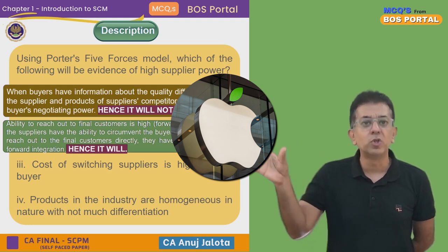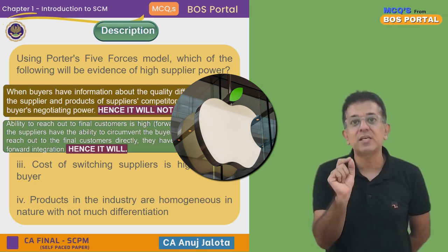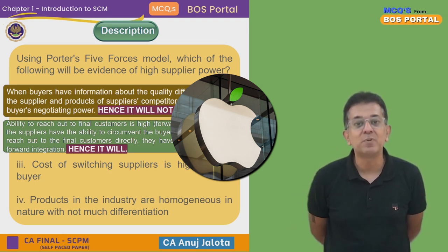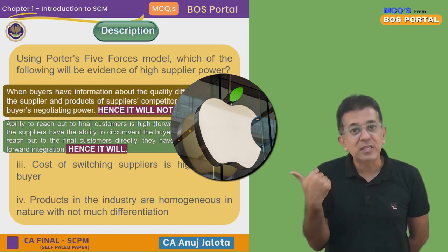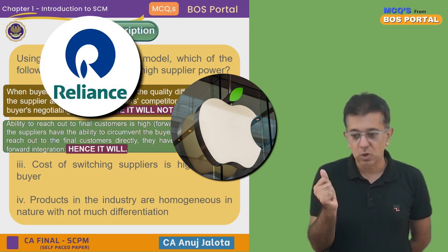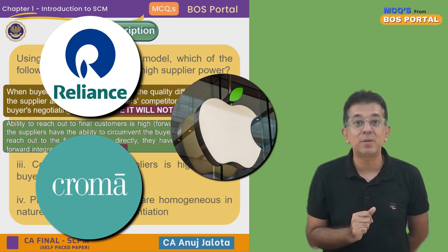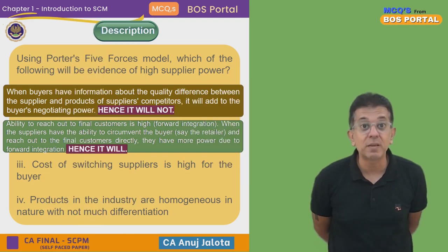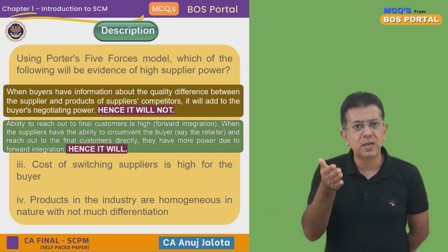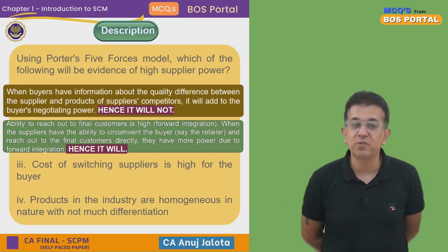The best example is Apple. In the beginning, Apple was always dependent upon brick-and-mortar stores — normal shops where you buy Apple phones. But the largest sales of Apple now happen from Apple's own website. They have bypassed the retailers, so a store like Croma doesn't have much bargaining power with Apple because Apple knows it can sell directly to final consumers. Therefore, bargaining power of Apple as a supplier to Croma is very high.